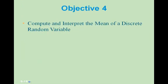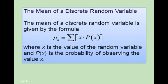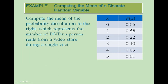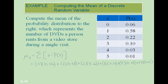Objective 4: compute and interpret the mean of a discrete random variable. The mean is given by the formula mu sub x, which is the sum of x multiplied by the probability of x. Looking again at our DVD rental example, the mean is the sum of each value of x multiplied by its corresponding probability P of x. When we perform these operations, we get a mean value of 1.49.